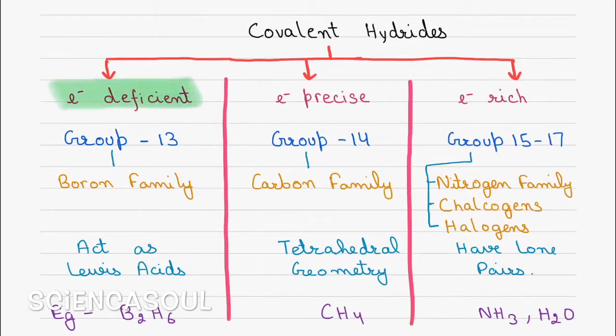Now covalent hydrides are of three types: electron deficient, electron precise, and electron rich. Electron deficient includes hydrogen bonding with group 13 elements, which is boron family. Electron precise includes hydrogen bonding with group 14 elements, which is carbon family. And electron rich includes hydrogen bonding with group 15 to 17 elements, which are nitrogen family, chalcogens, and halogens.